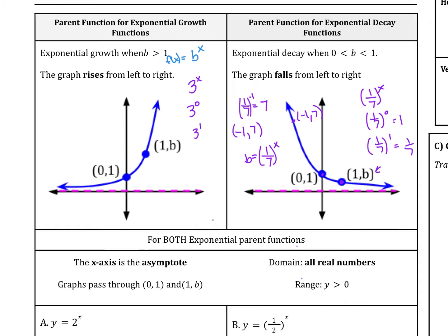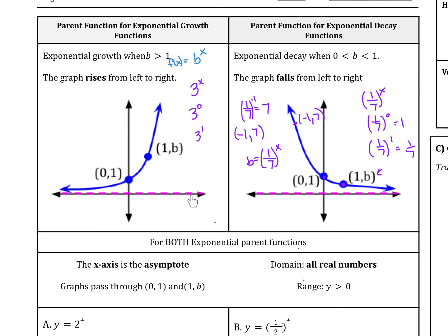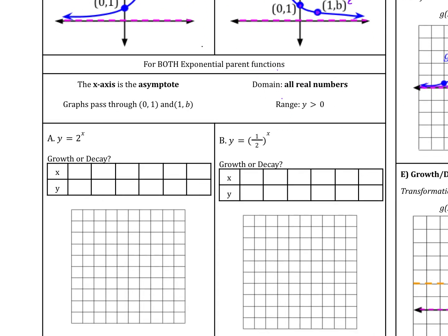Now for both exponential parent functions, the x-axis is the asymptote. So it means it's going to get closer and closer to that line, but not pass through it in this case. The graph always passes through 0 comma 1 and 1 comma b. The domain is all real numbers, so the arrow goes forever to the left, forever to the right. The range, notice here with the asymptote, is y is greater than 0. All the values are above that x axis, so all the y's are positive.